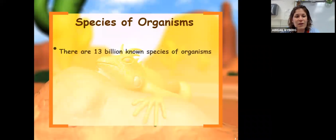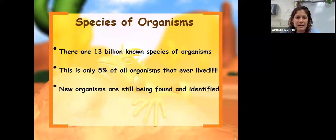First of all, if we just look at the diversity of organisms here on Earth, there are 1.3 billion known species of organisms, and that accounts for about only 5% of all organisms that have ever lived.